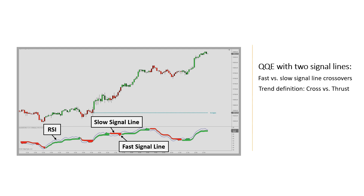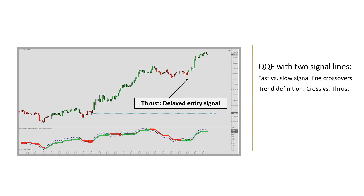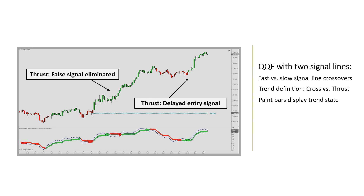The thrust inevitably delays entries. Here we have the thrust definition displaying on the chart with paint bars — the cross was down here, but the thrust came at this bar, creating a delay. However, this also eliminates a lot of false signals. If we had used a cross, you'd have a sell order generated here and you'd lose out on this nice uptrend. So eliminating false signals is the main benefit of the thrust setting.